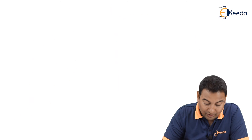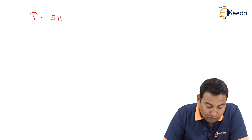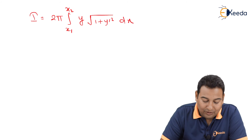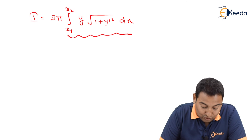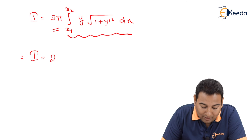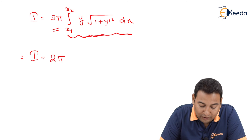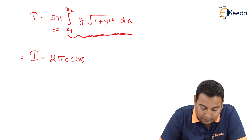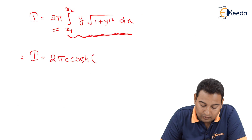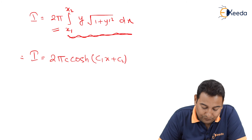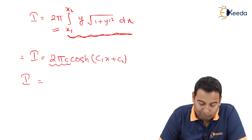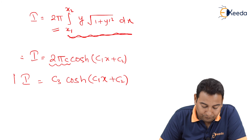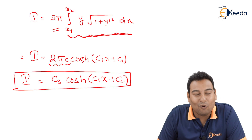This is the solution for y. Remembering that the original integral had a factor of 2π, the final answer is: I is proportional to c · cosh(c1·x plus c2), which can be written as c3 · cosh(c1·x plus c2). This is the required solution for this particular problem. Hope you understood. Thank you.